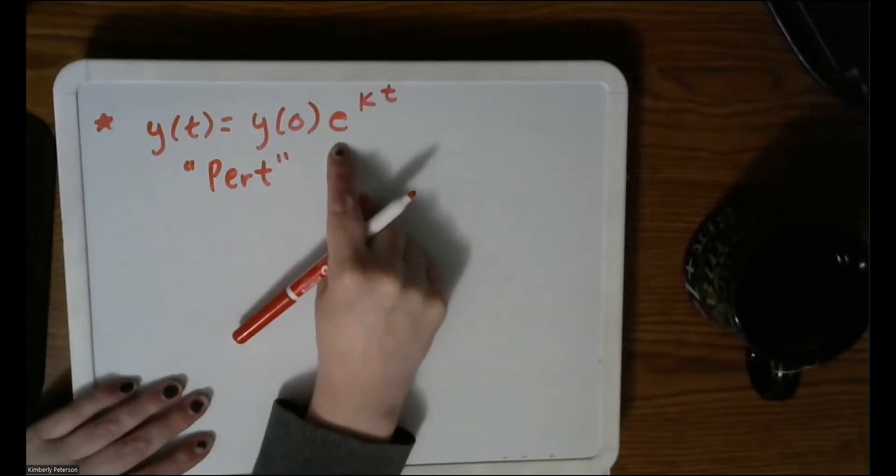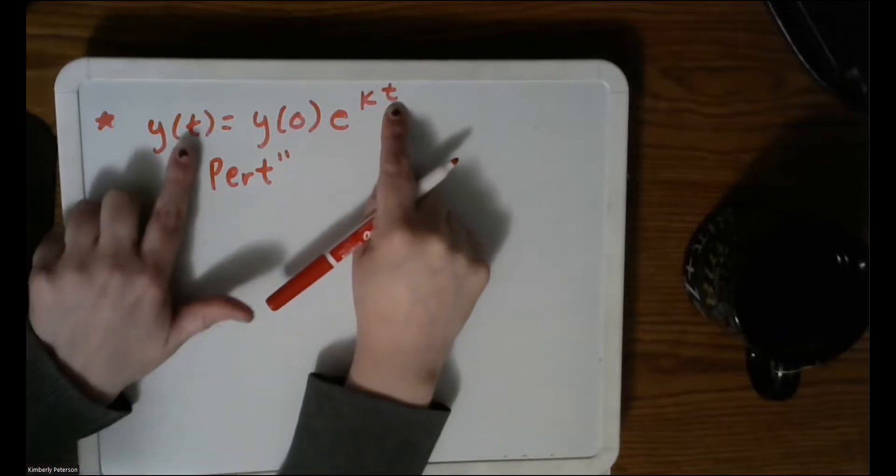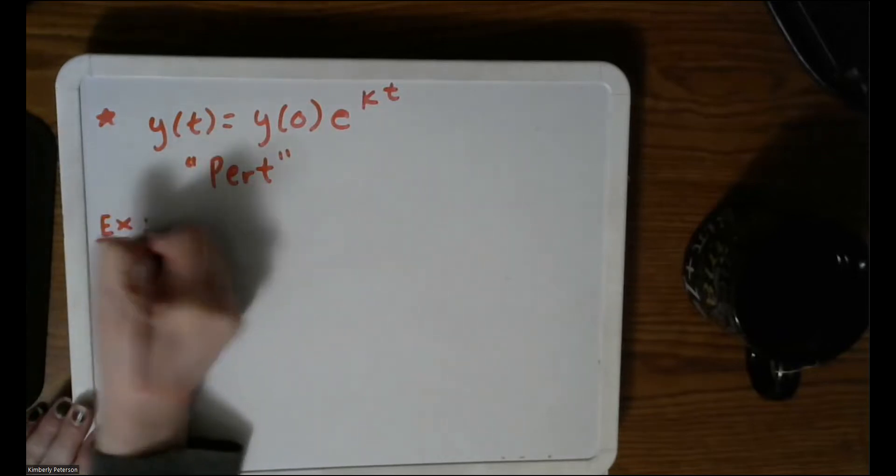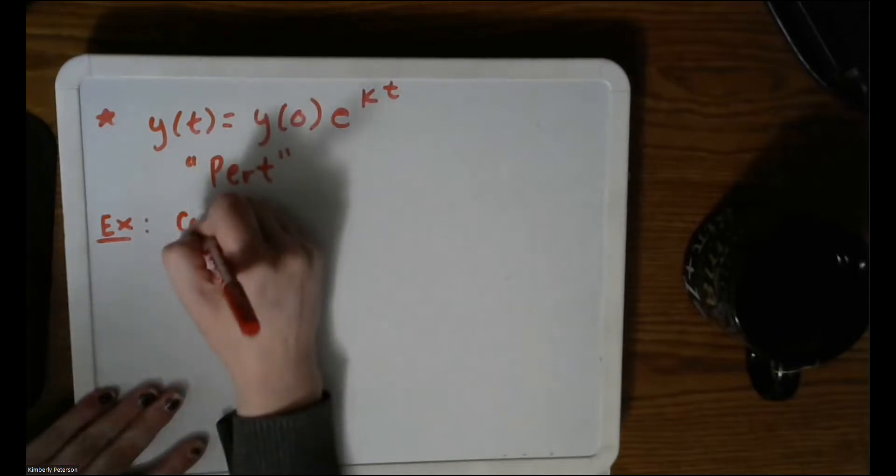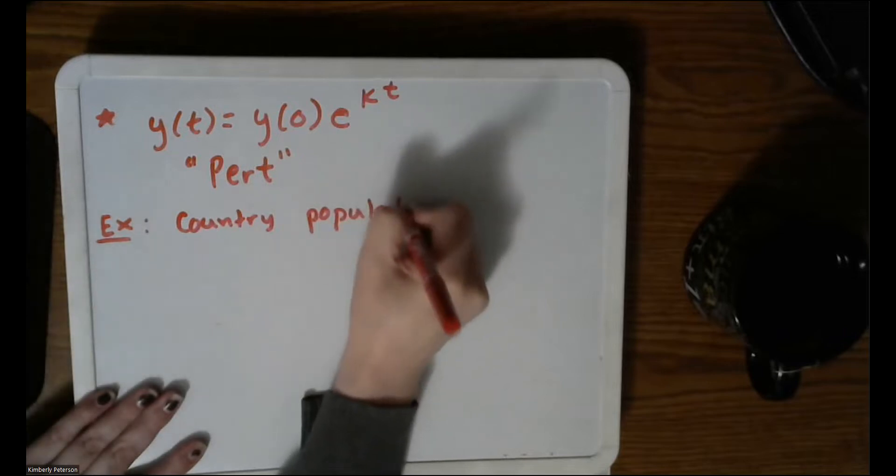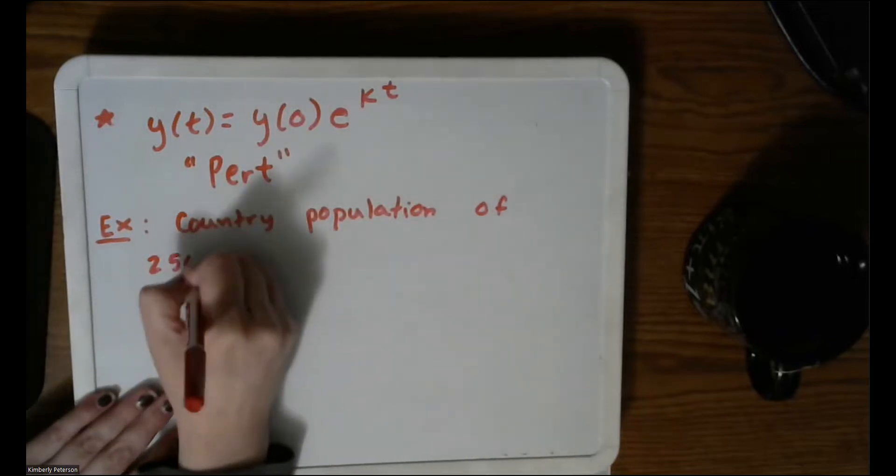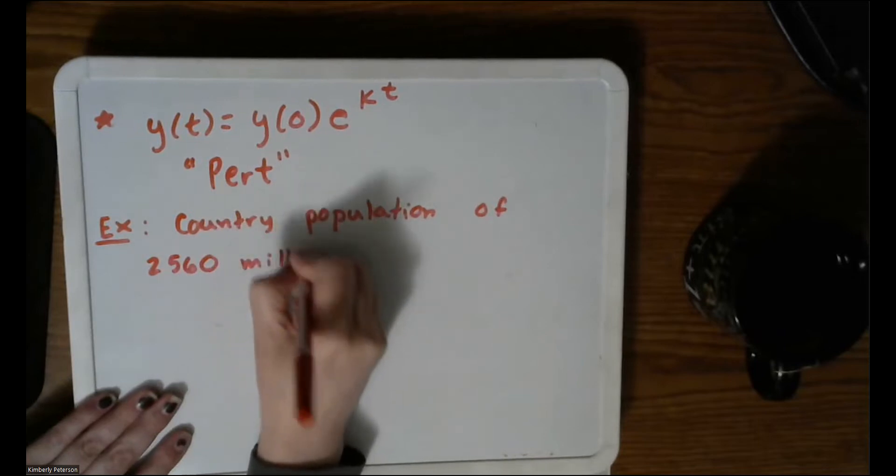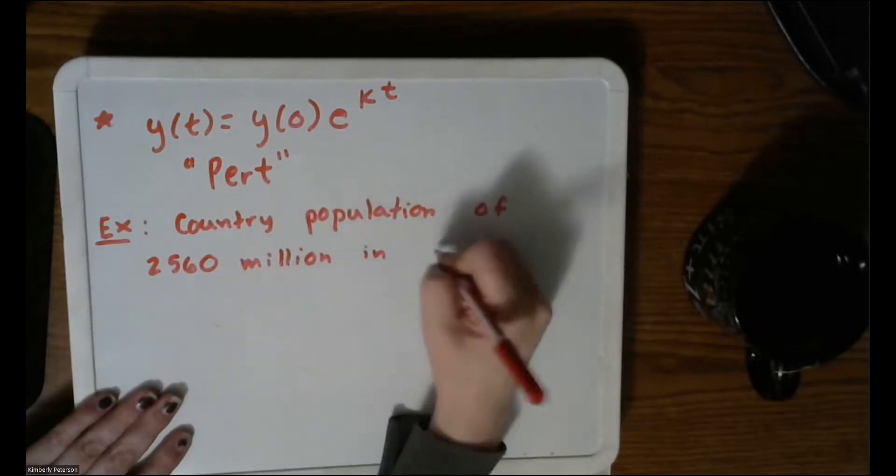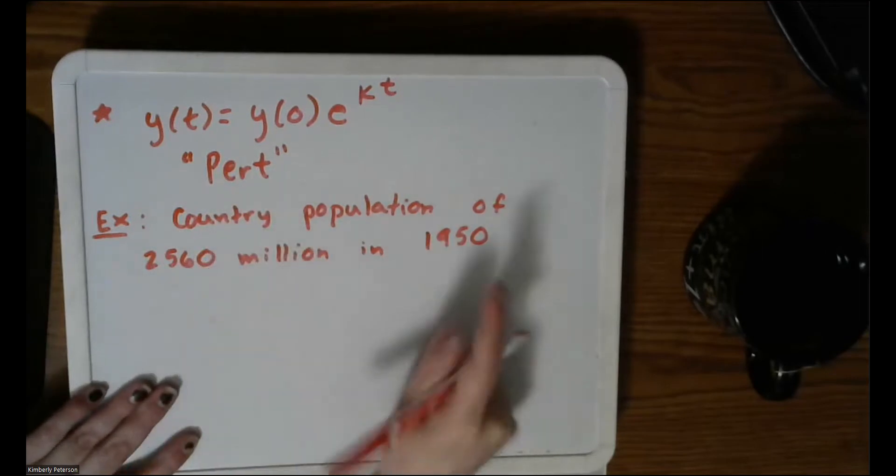So you've seen this before. I've done this in terms of money. We did this in terms of principle and continuous compounding, or what's also known as PERT. So some of you might have heard this phrase before. So y(0) is just your initial population, e is just an irrational number, k is that natural growth or decay constant, and then t is your variable. So there's only one variable, t, and everything else would be provided. So let's say in some country, we had a population of 2560, let's do it in millions.